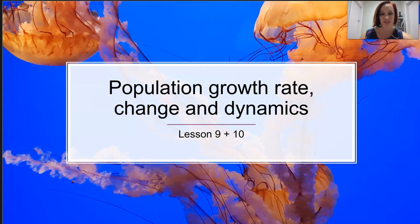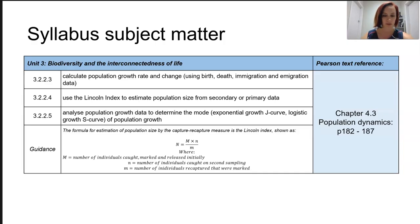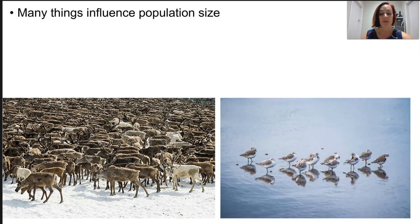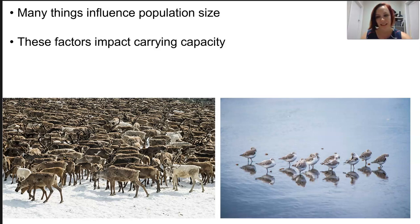In this lesson, we're looking at population growth rate, change, and dynamics. There's quite a few points here, and it will be in two parts. There are many things that influence a species population size, both abiotic and biotic, and these will in turn change and limit the carrying capacity for that species and result in different numbers of individual organisms in that population.